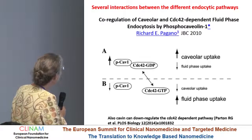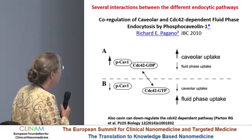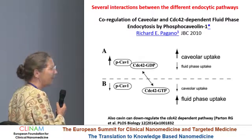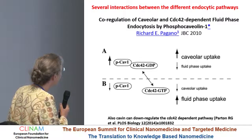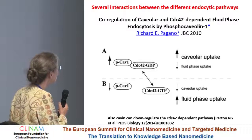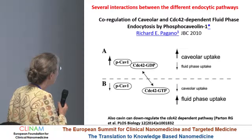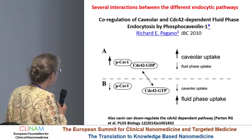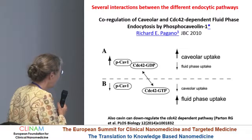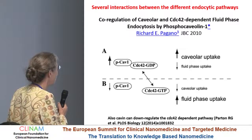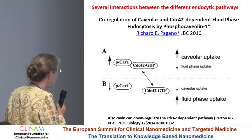One should be aware that there are several interactions between endocytic pathways. So if you try to affect only one, you may certainly affect several others at the same time. For instance, there is a co-regulation of caveoli and CDC42-dependent fluid phase uptake. If one tries to study the role of caveoli by upregulating phospho-caveolin, one will of course affect caveoli uptake, but will at the same time downregulate fluid phase uptake through the CDC42-dependent pathway.